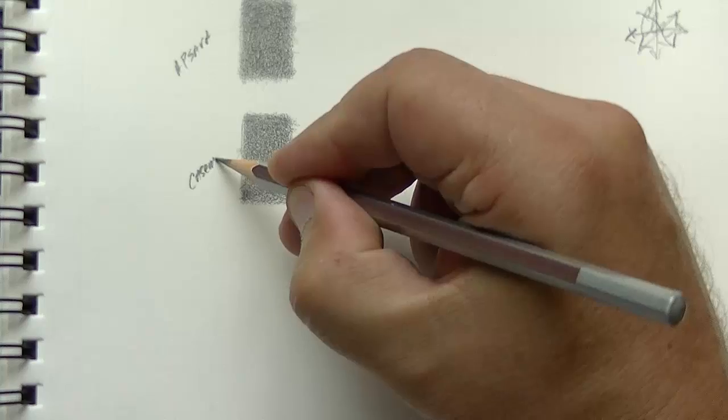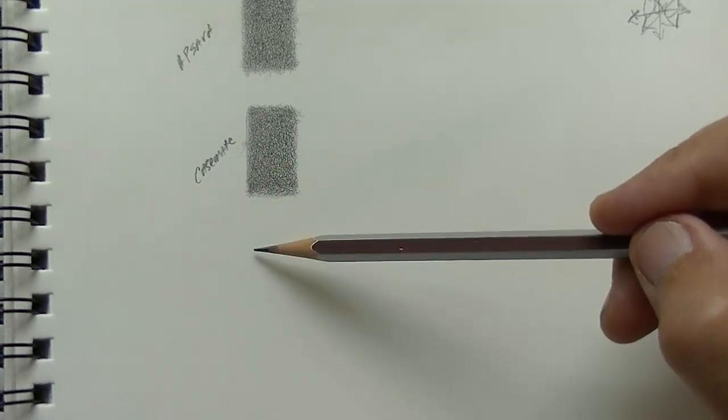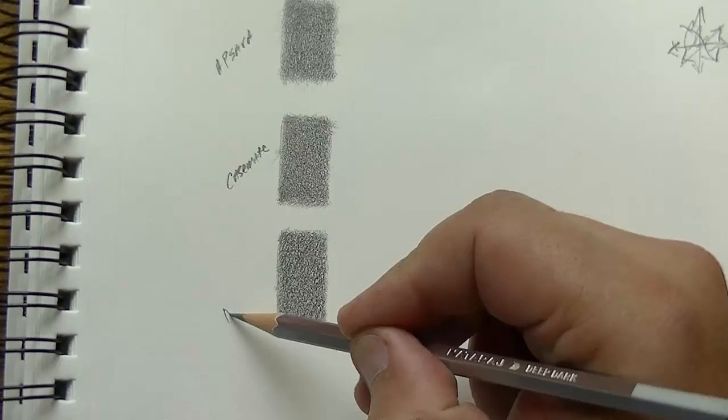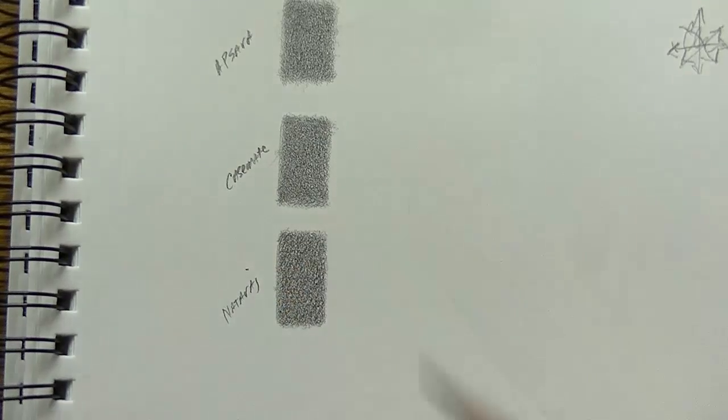And now I will do the casemate in the middle. We'll start with the up and down first. Okay so this was the casemate. And now for the Nataraj pencil. Nataraj. And I don't know if I'm pronouncing any of those correct but let me just turn the blinds off here. There we go. Tear that sheet off and let's bring on the lights.